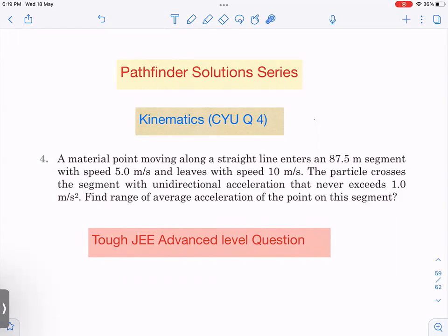In this video, we are going to discuss Kinematics Check Your Understanding Question 4. The question is: A material point moving along a straight line enters an 87.5 meter segment with speed 5 meters per second and leaves with speed 10 meters per second. The particle crosses the segment with unidirectional acceleration which never exceeds a maximum value of 1 meter per second squared. We have to find out the range of its average acceleration of the point on this segment.